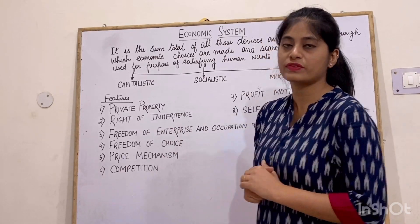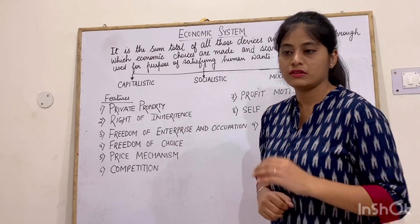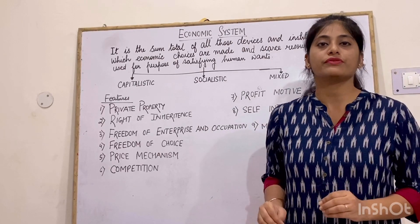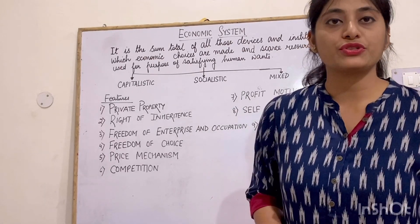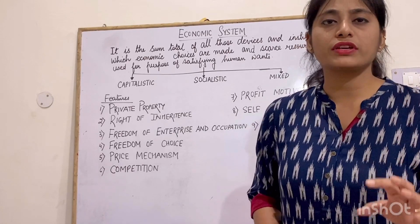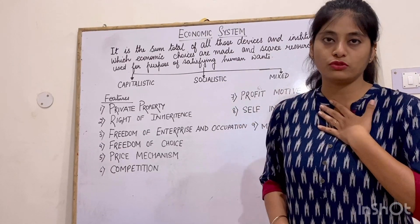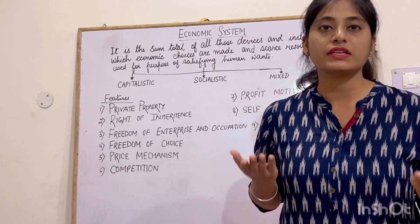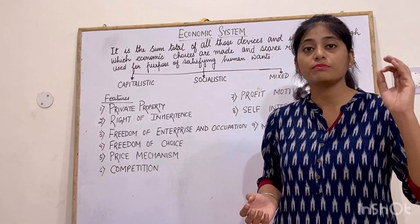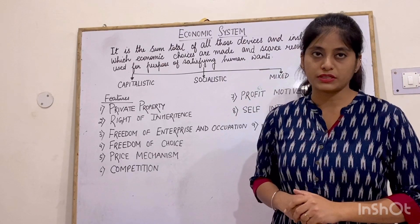Let's come to the features of capitalistic economy. Number one is private property. The owner of the productive resources — productive resources like land, labor, and capital — all the productive resources are owned by private individuals. Suppose I am having those resources, then I am a private individual. That is why it is called the most important and most basic feature: private property.